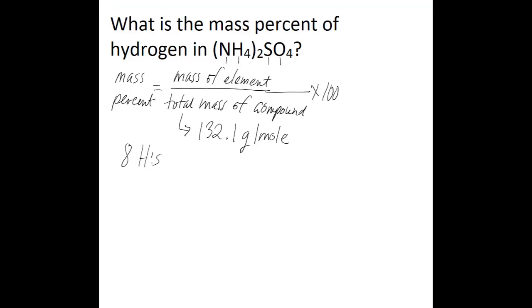So the total mass of hydrogen in this compound is going to be eight hydrogens times 1.008 grams per mole, which is just for one hydrogen atom. And that's going to equal 8.064 grams per mole.